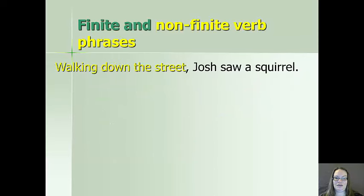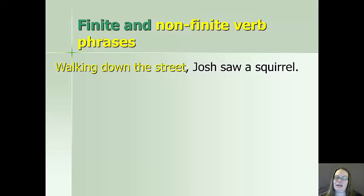Looking at some examples — 'walking down the street, Josh saw a squirrel.' The non-finite verb phrases in these slides will be in yellow, and the finite ones in black. Here, 'walking down the street' doesn't have a subject, so it must borrow the subject from the next phrase: Josh. So Josh was both walking down the street and Josh saw a squirrel.